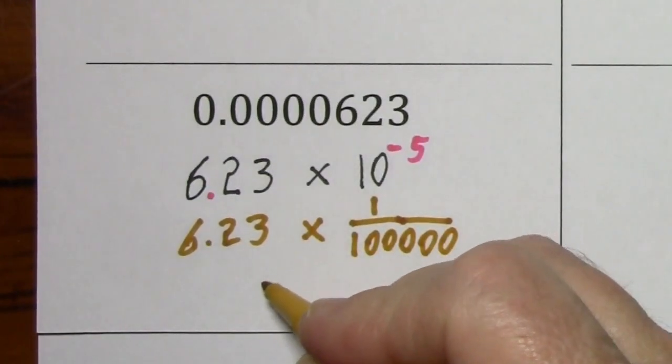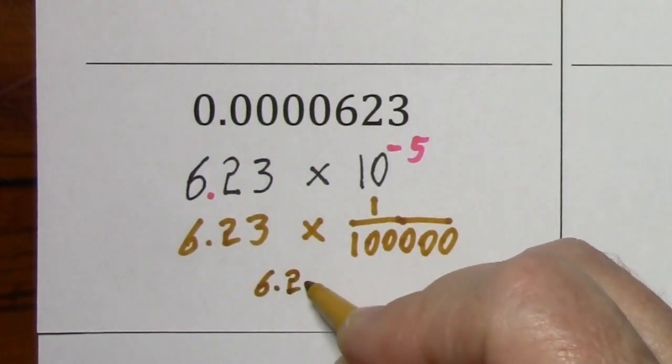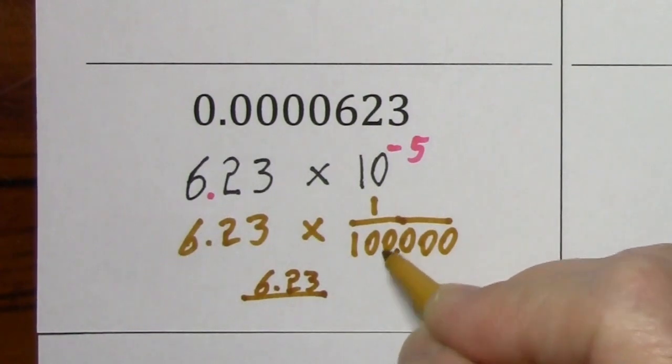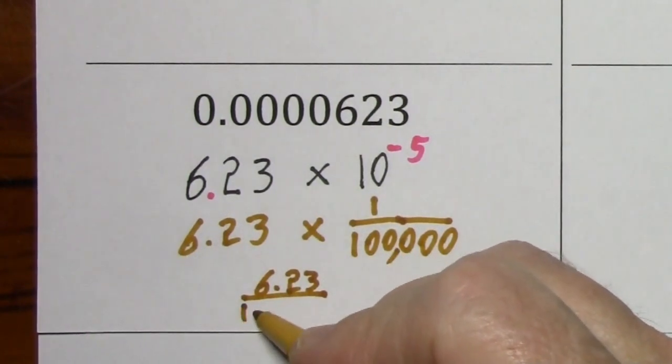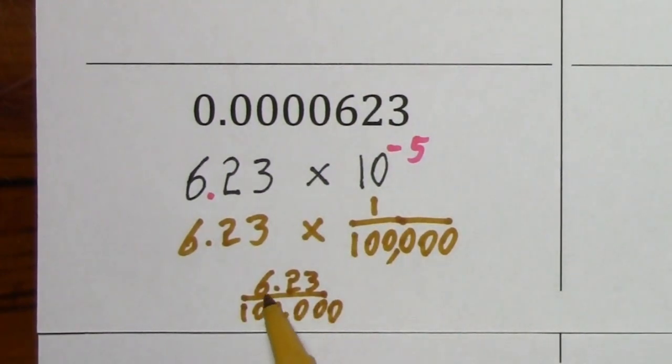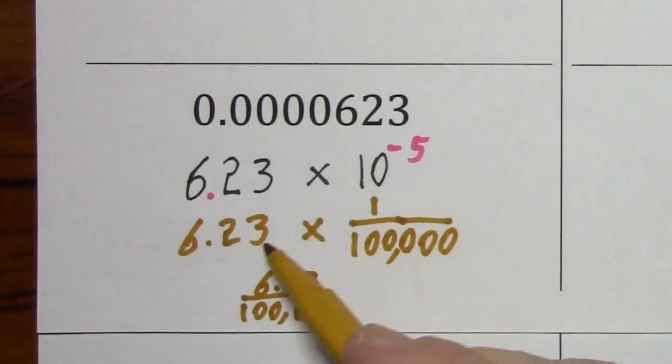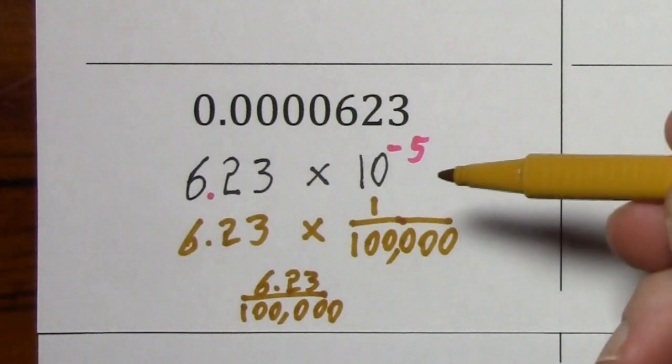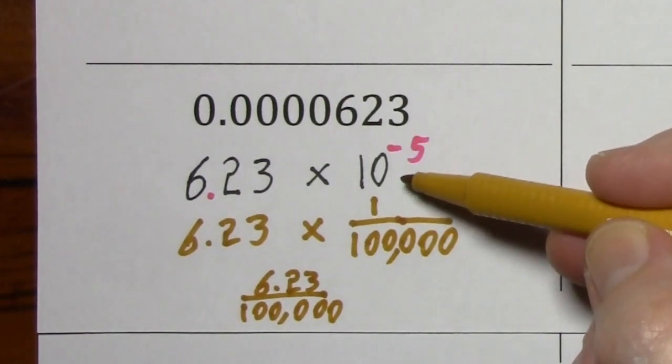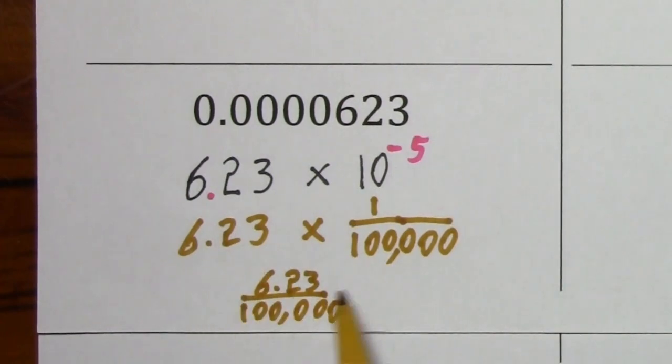So we would really have 6.23 over what is that, a hundred thousand. And this would cause us to move the decimal back five places. The point of this is just to show that we've actually represented this number in scientific notation. It's helpful to understand this, but you certainly don't have to show it.